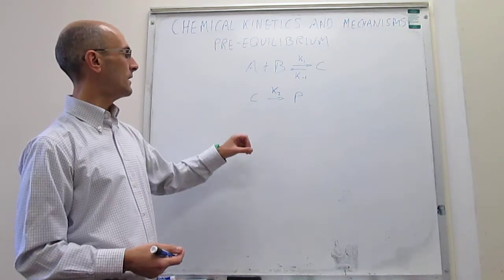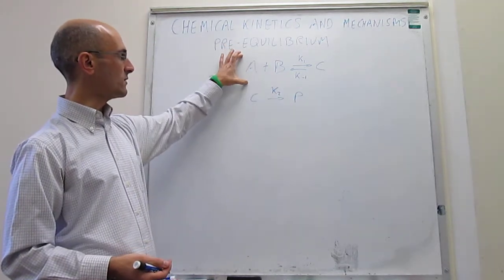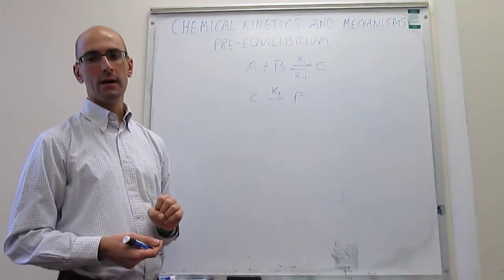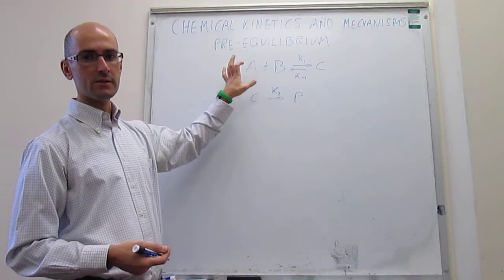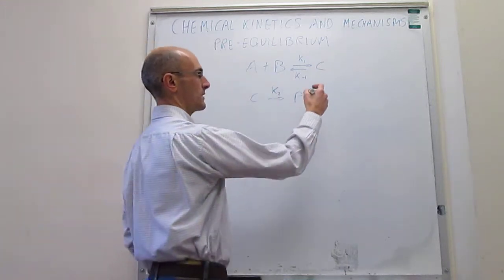The first one is, by comparison of the rate constant, we can determine that the first step is actually slow. The first scenario is that this is slow, and this one is fast.